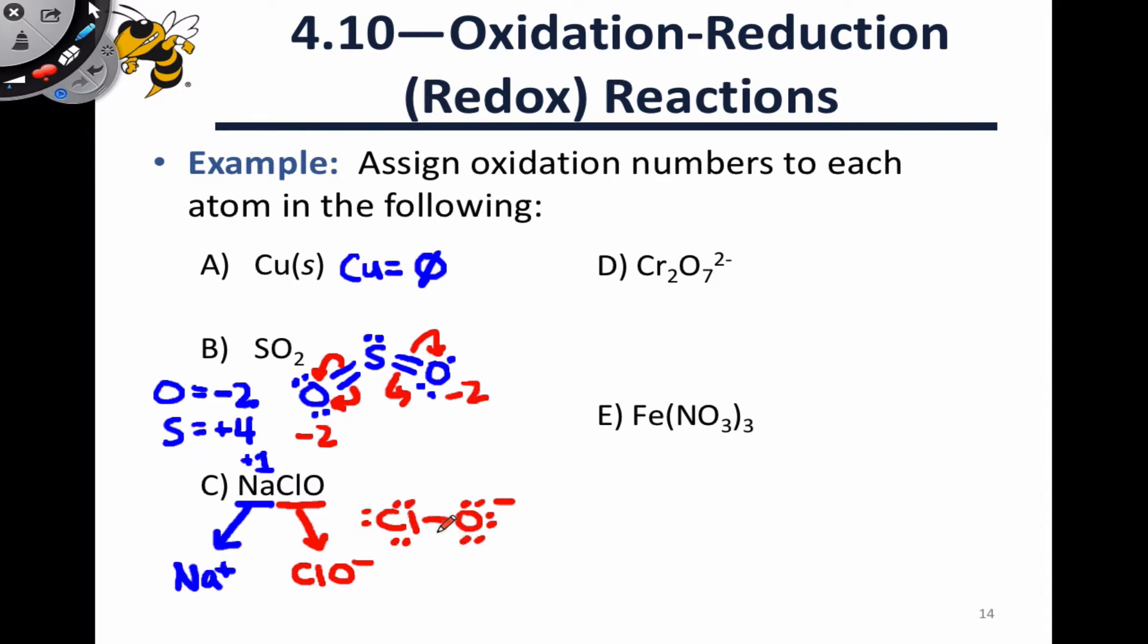If we imagine pushing both electrons to the more electronegative oxygen atom, we're going to end up with eight electrons on oxygen, so oxygen is going to have an oxidation number of minus two, as is typical for oxygen. That means that chlorine here must have an oxidation number of plus one, so that the overall sum of the oxidation numbers comes out to negative one in accordance with the charge on that ion.